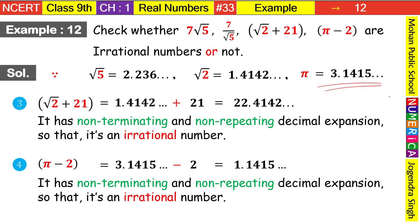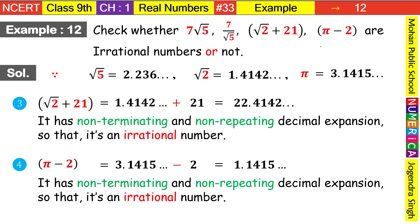So you have seen addition, subtraction, multiplication, and division involving irrational and rational numbers. The first number was multiplication, second was division, third was addition, and fourth was subtraction. You have now seen operations between rational and irrational numbers. According to the rules explained in the last video, you now understand why these are irrational. Practice by taking examples from the book, solve them yourself, then match your answers. Thanks for watching.